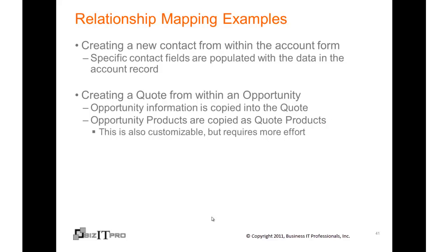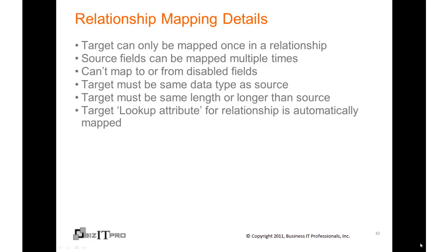Mapping for the opportunity products to quote products is also customizable, but it requires a few tricks to get there. Regarding mapping details: the target attribute can only be mapped once in a relationship, because subsequent mappings would just overwrite the data — you could not concatenate two fields. On the other hand, source fields can be mapped multiple times to different target fields.